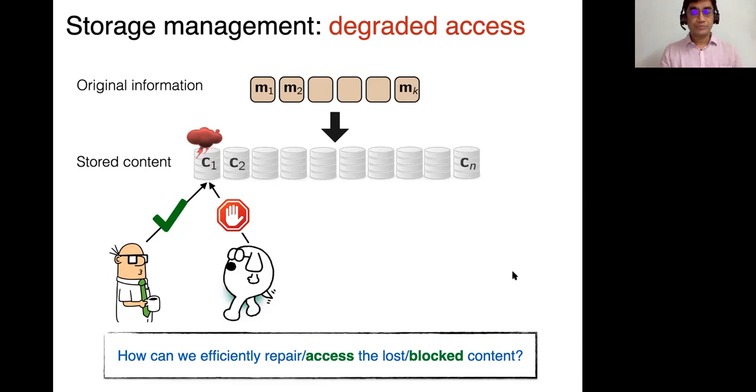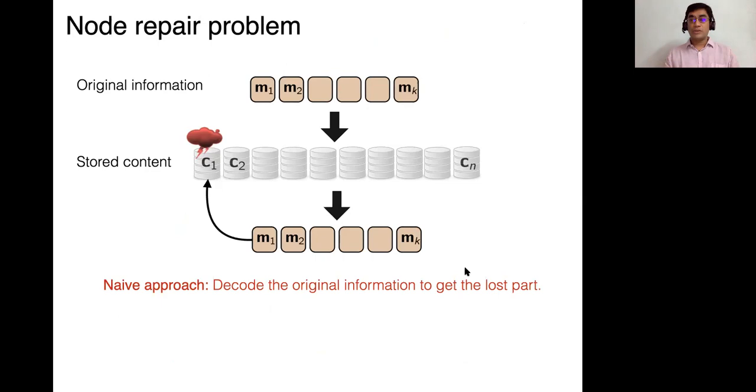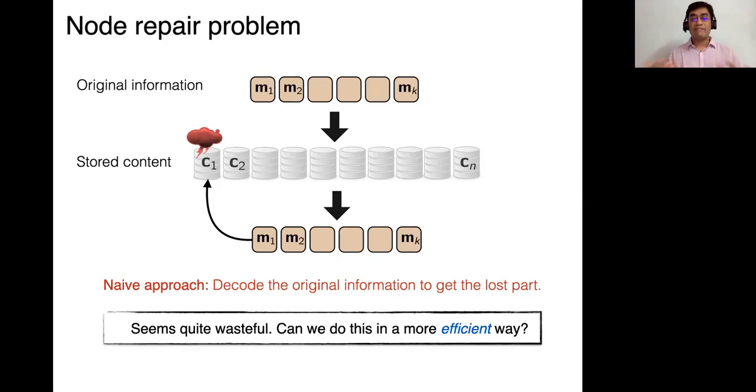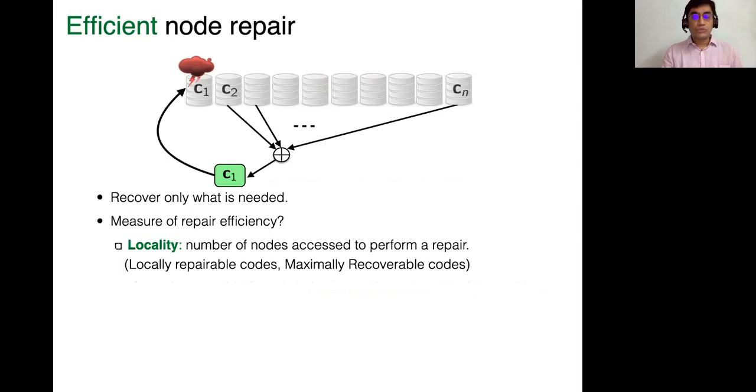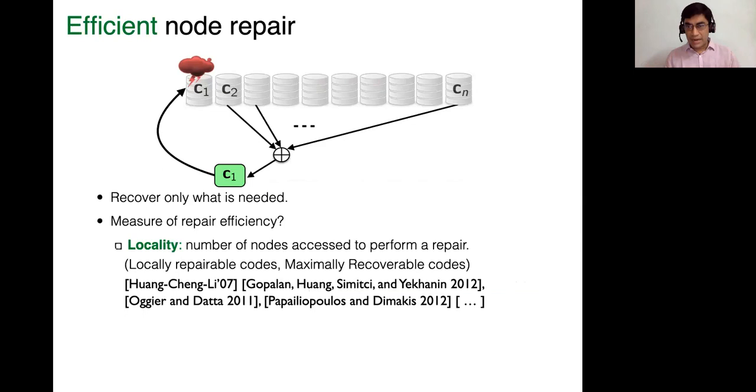That's the node repair problem. How do you act when one node goes down or is inaccessible, what do you do with it? So in a sense, this is not a big deal, because your storage system is designed in a way to tolerate lots of erasures or failures. So one failure is no big deal. So you could decode the entire original information and recover the single lost part C1. But this clearly seems very wasteful, because you have lost only one symbol C1 and it can be recovered in a more efficient way.